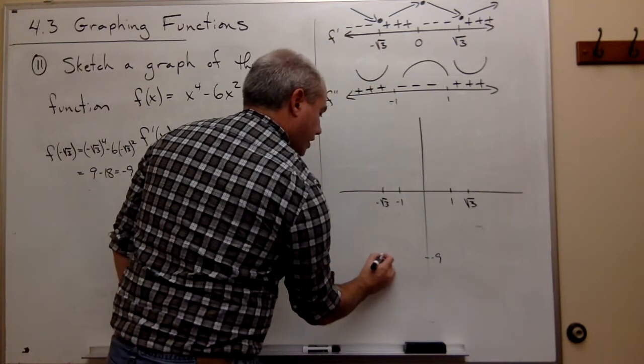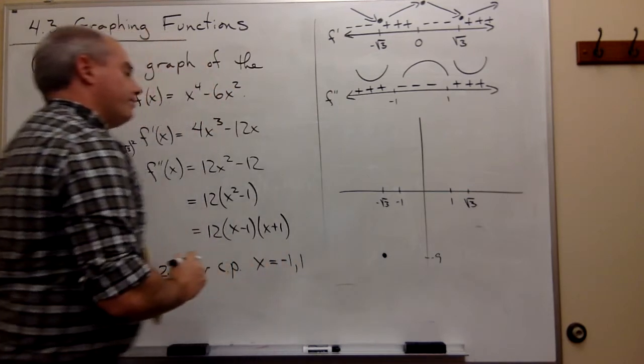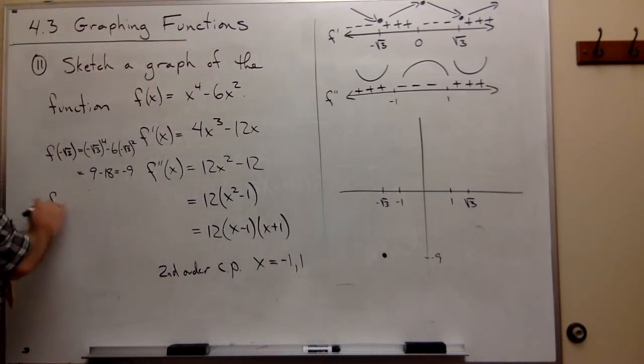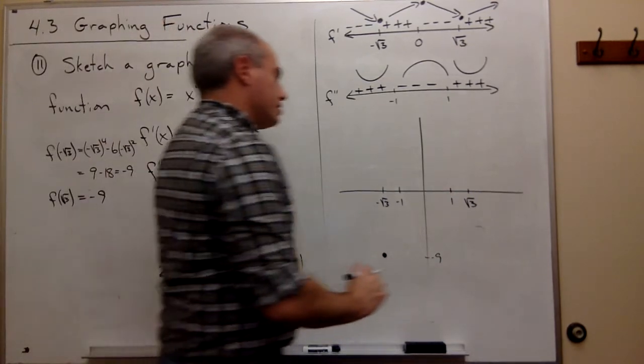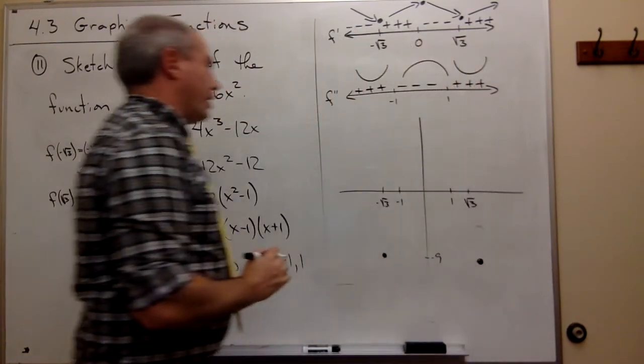So I'd get a point right here. Now, I don't think that it would be any different if I looked at f of root 3, because everything is to the fourth and squared. So this is also negative 9. So I'd get a negative 9 right here.